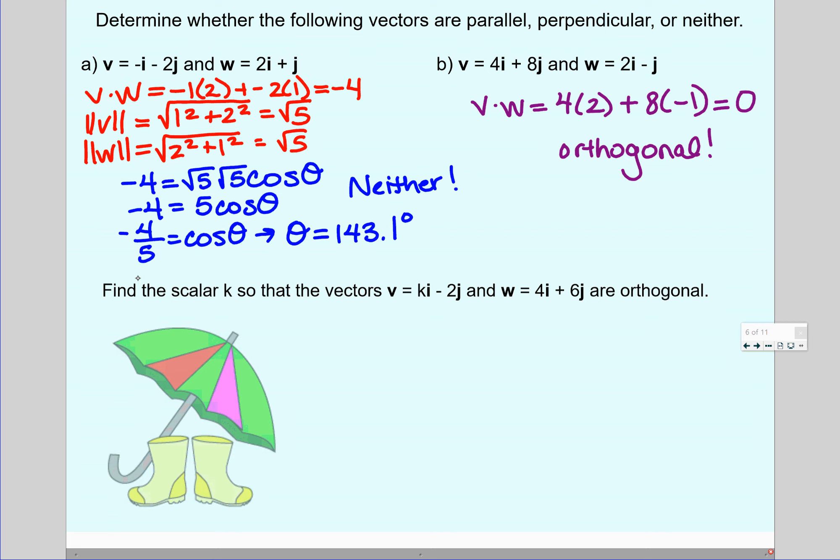So that property is what we're going to use for this problem. It says find a scalar K, so a number, so that these two vectors, V and W, are orthogonal. If you know they're orthogonal, you know from yesterday that the dot product must equal 0. To calculate the dot product, remember you multiply the first components together, you multiply the second components together, and then you add.